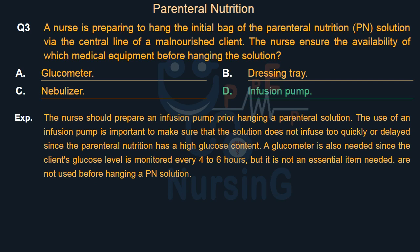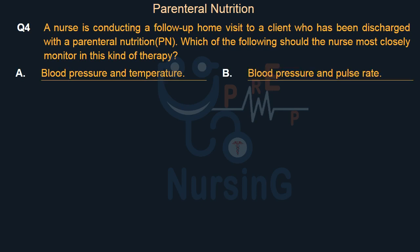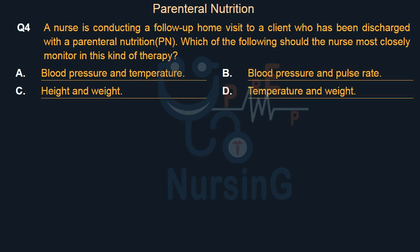A nurse is conducting a follow-up home visit to a client who has been discharged with parenteral nutrition (PN). Which of the following should the nurse most closely monitor in this kind of therapy? Option A: Blood pressure and temperature. Option B: Blood pressure and pulse rate. Option C: Height and weight. Option D: Temperature and weight.